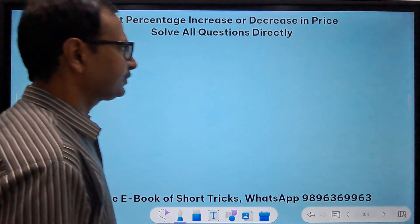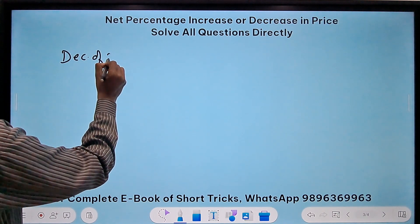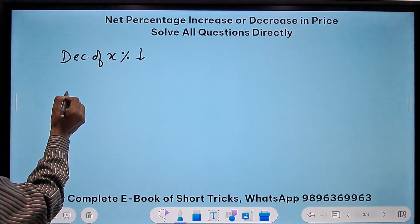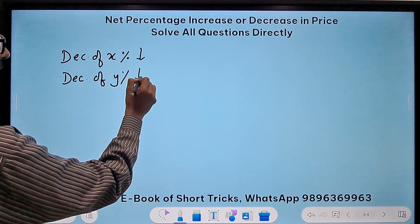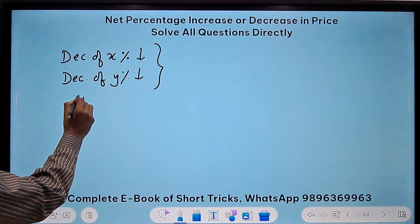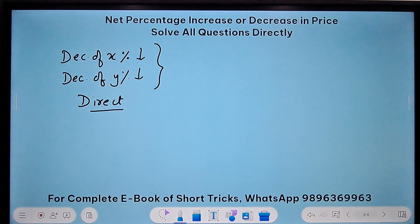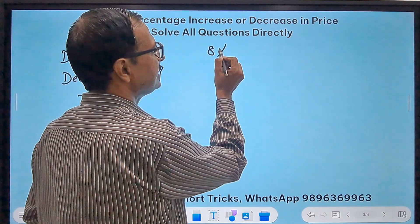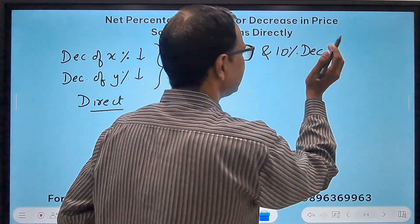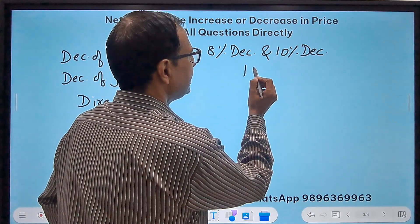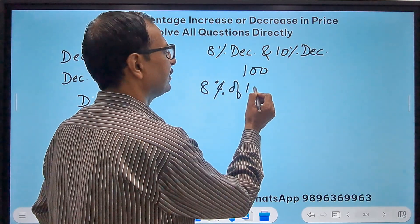Let's take the third case now. In the third case I'm going to go with a decrease of x percent first, and then another decrease of y percent in the second time. Let's do it traditionally first by taking some values: 8 percent decrease and then 10 percent decrease. Initially it was 100, so 8 percent of 100 is 8, so 100 becomes 92.